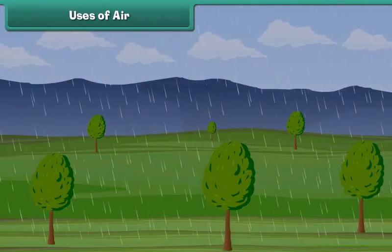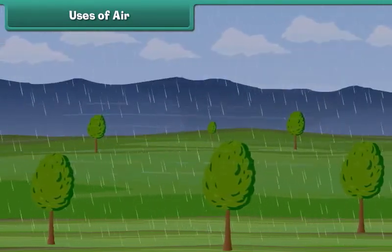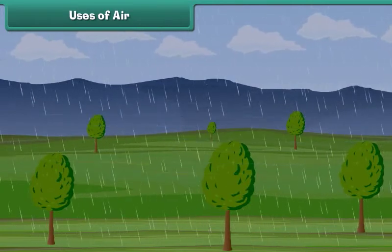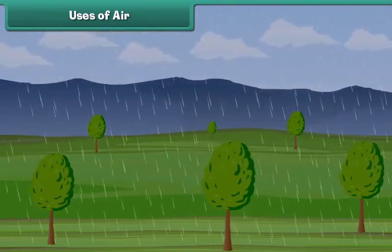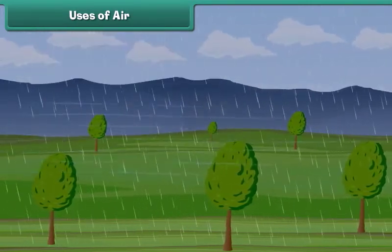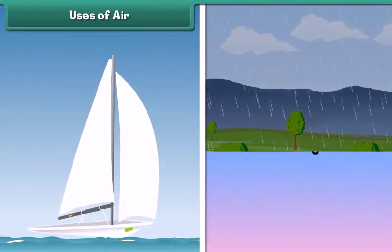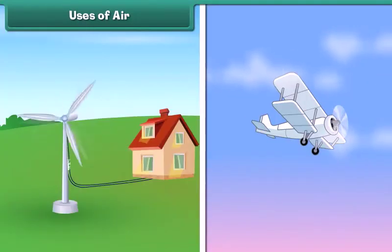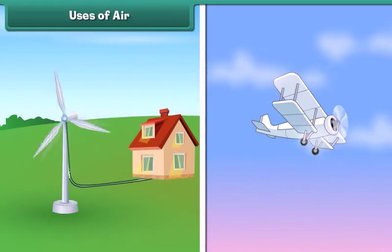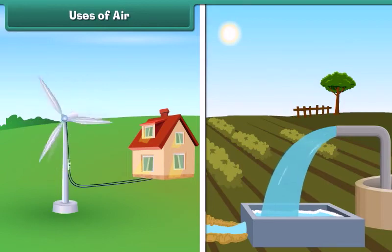Moving air is known as wind. Wind moves clouds and causes rain. Wind helps sailboats and gliders to move. The power of wind is also used to generate electricity, and wind power helps pump water.